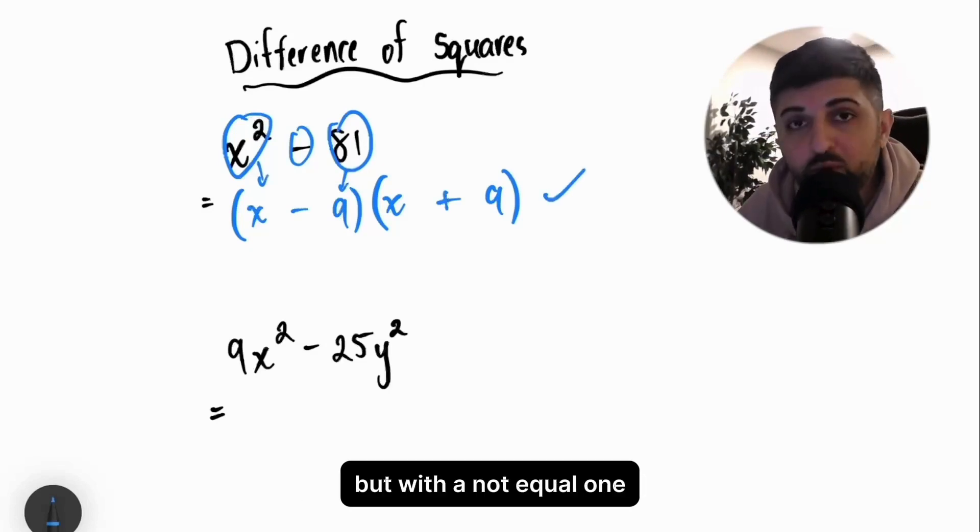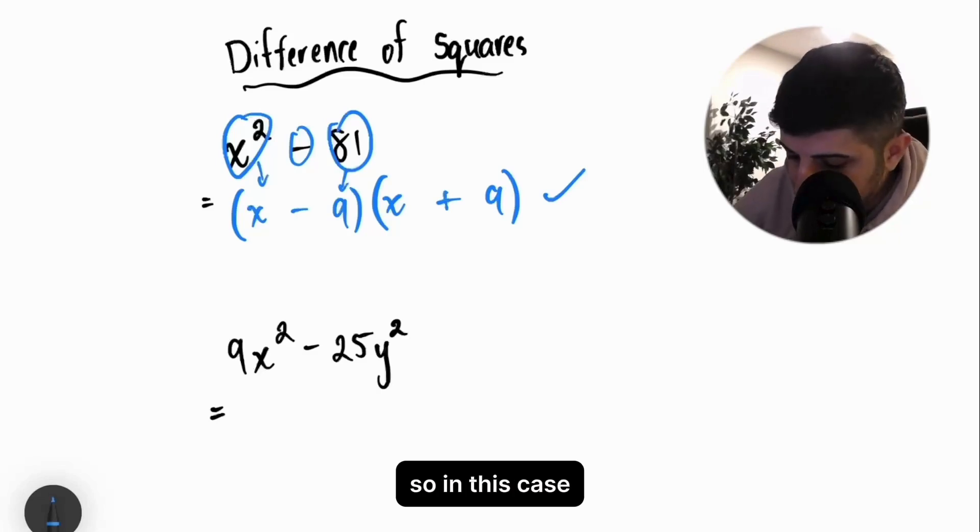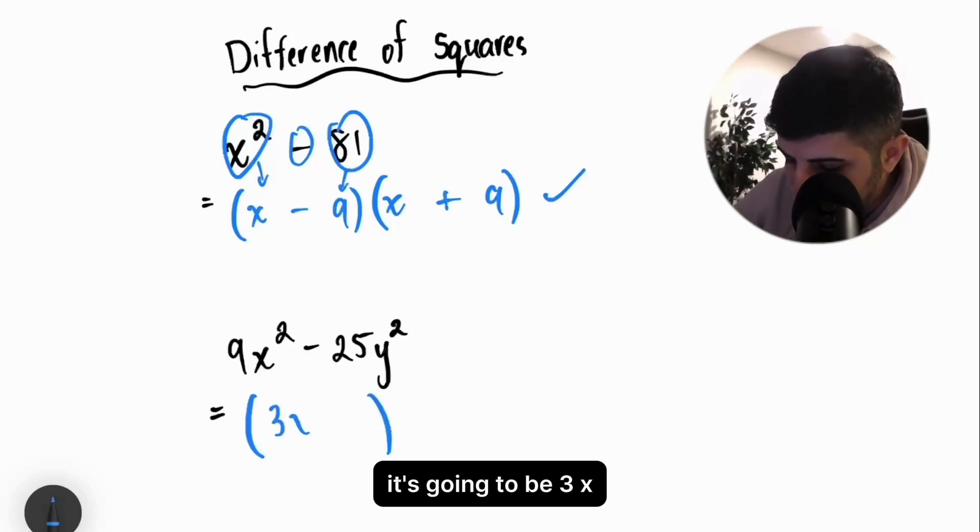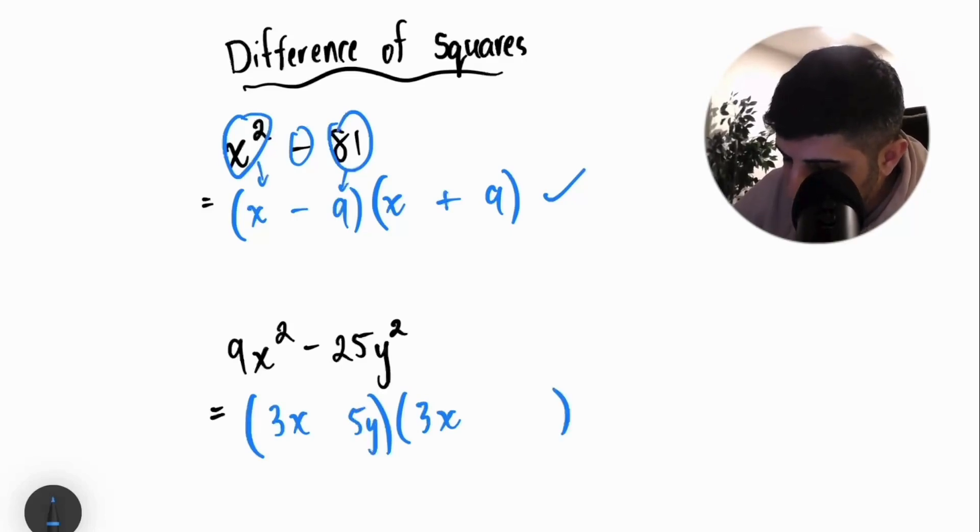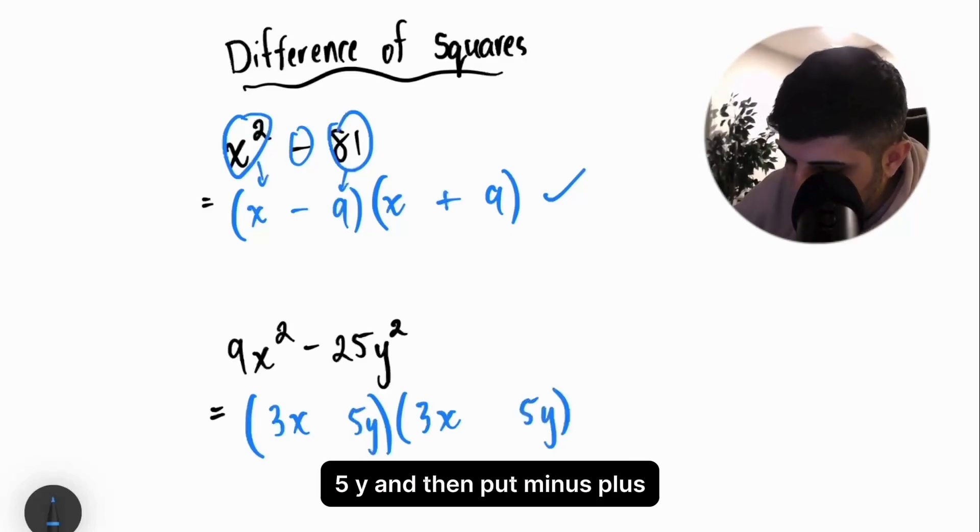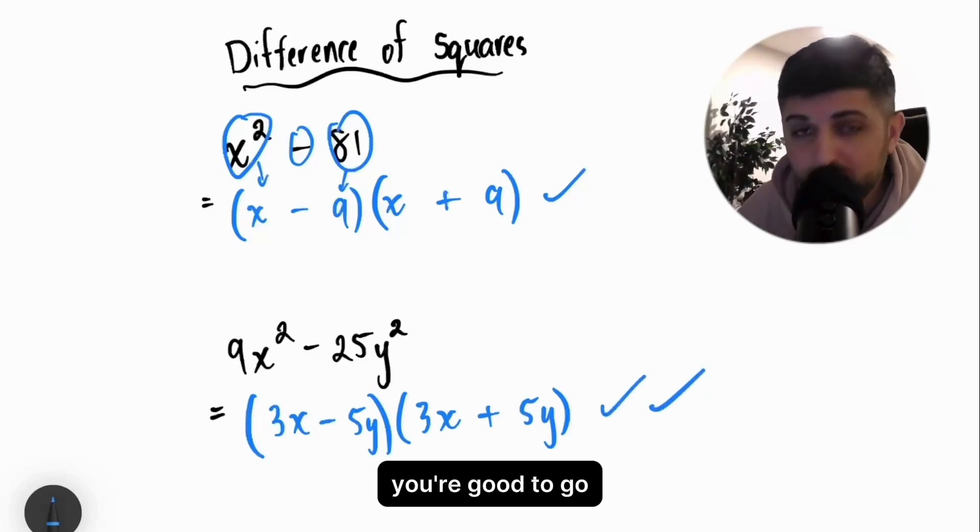Now, let's do the same example but with a not equal 1. In this case, it's going to be 3x and it's going to be 5y. And then put minus plus or plus minus. Doesn't matter, you're good to go.